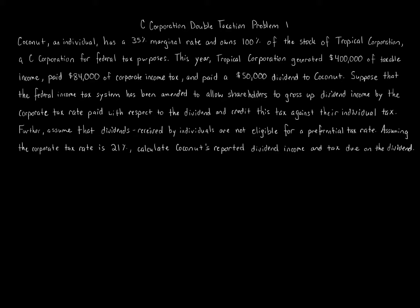C-Corporation double taxation problem one. Coconut, an individual, has a 35% marginal rate and owns 100% of the stock of Tropical Corporation, a C-Corporation for federal tax purposes. This year, Tropical Corporation generated $400,000 of taxable income, paid $84,000 of corporate income tax, and paid a $50,000 dividend to Coconut.